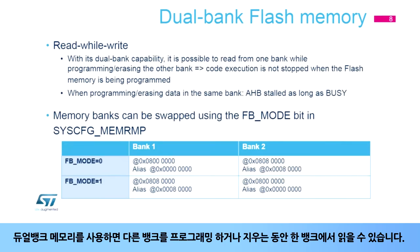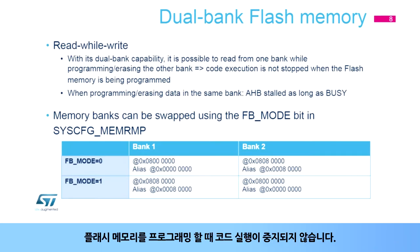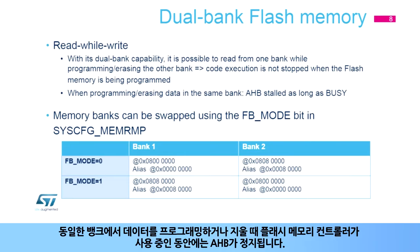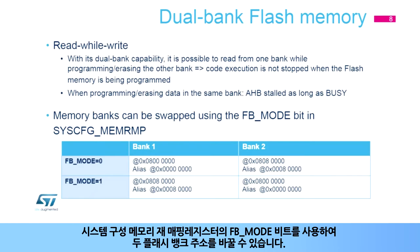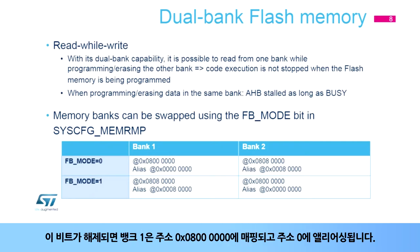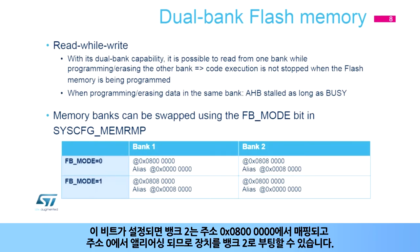With a dual bank memory, it is possible to read from one bank while programming or erasing the other bank. Code execution is not stopped when the flash memory is being programmed. When programming or erasing data in the same bank, the AHB is stalled as long as the flash memory controller is busy. Using the FB mode bit in the system configuration memory remap register, the two flash bank addresses can be swapped. When this bit is cleared, bank 1 is mapped at address 0x08000000 and aliased at address 0. When this bit is set, bank 2 is mapped at address 0x08000000 and aliased at address 0, which allows the device to boot into bank 2.